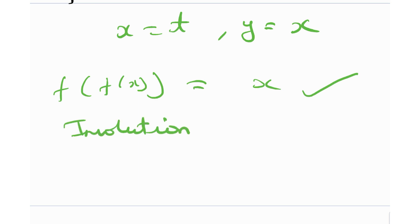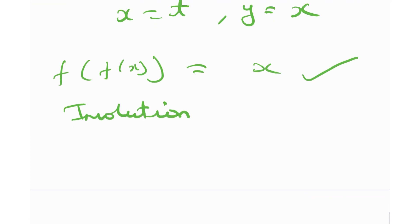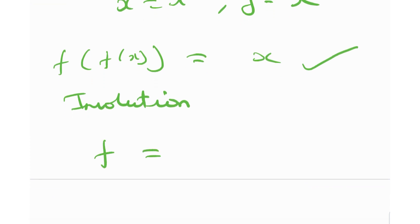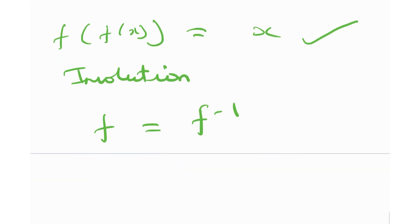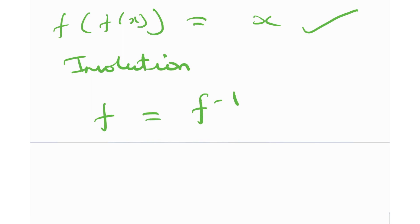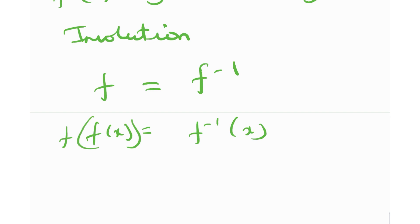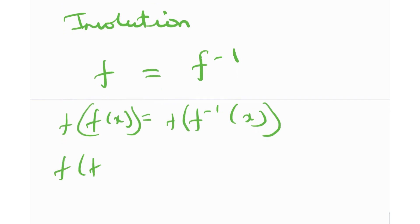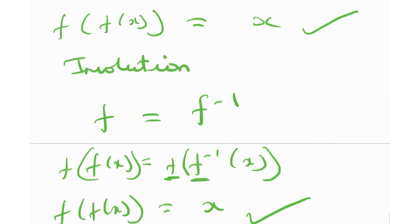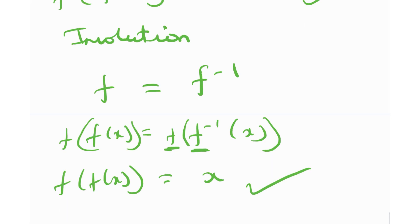This is an involution. A more rigorous definition of involution is a function f such that f equals its own inverse. So f(x) = f⁻¹(x), which means f(f(x)) = x, since the function and its inverse cancel out. Such a function in which the function equals its inverse is called an involution function.